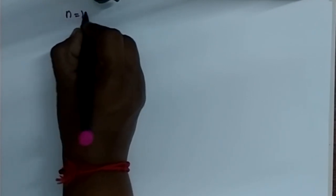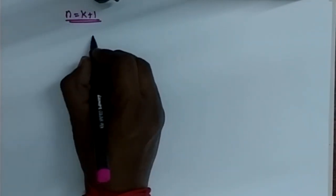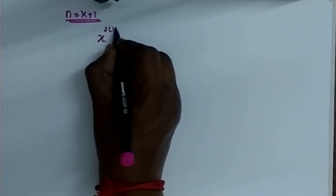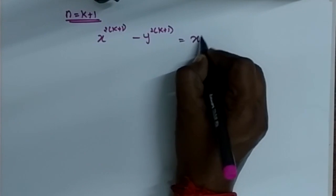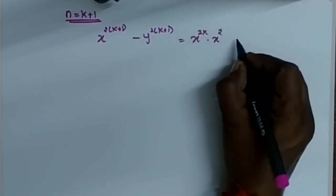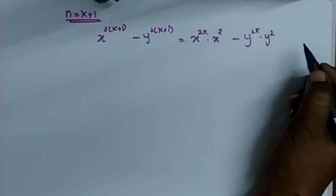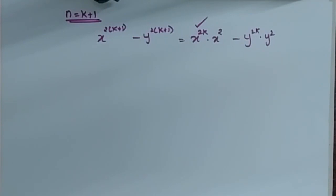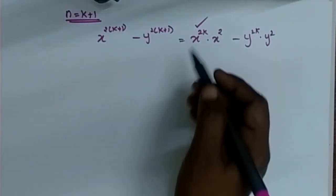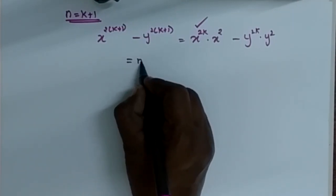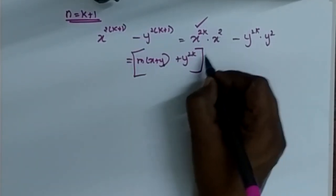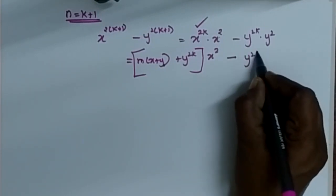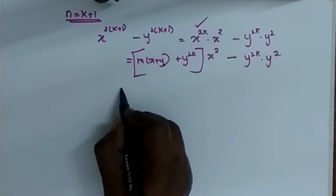We say that it is true for N equal to K, so now we are going to prove it for N equal to K plus 1. When I substitute N equal to K plus 1, I will get X power 2 into K plus 1 minus Y power 2 into K plus 1. This I can split and write as X power 2K into X squared minus Y power 2K into Y squared. I have found X power 2K in terms of Y, so I am going to replace it: this equals M into X plus Y plus Y power 2K, all multiplied by X squared, minus Y power 2K into Y squared.